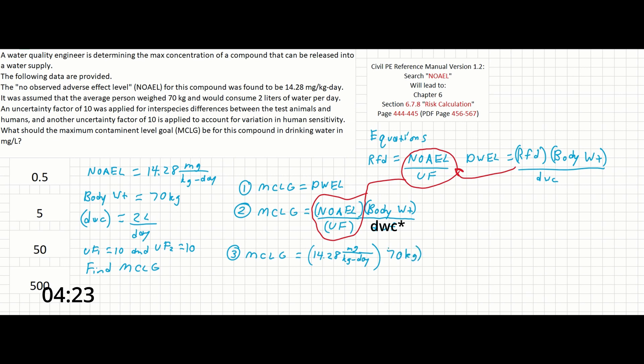over our first uncertainty factor of 10 times our second uncertainty factor of 10 times our drinking water consumption of 2 liters per day.